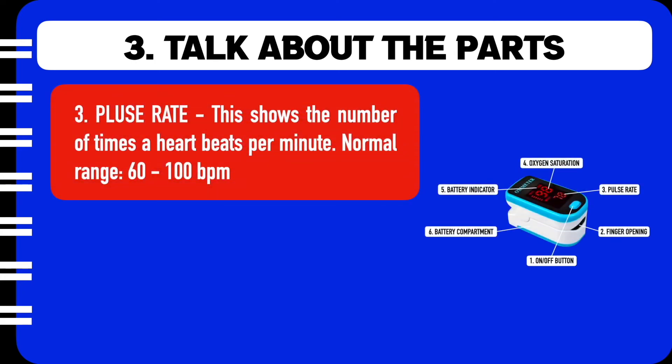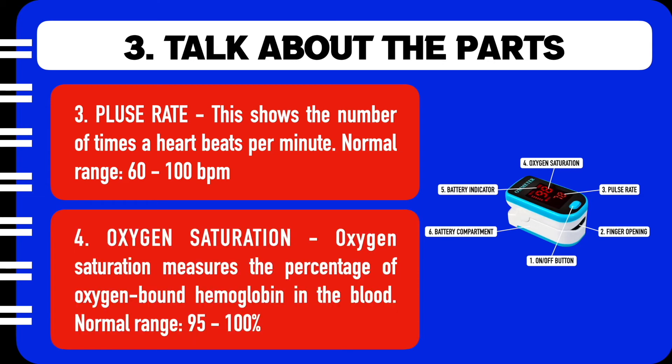The third component is the pulse rate reading. This shows the number of times the heart beats per minute. The normal range is between 60 to 100 beats per minute. The fourth component is the oxygen saturation reading. The oxygen saturation measures the percentage of oxygen bound hemoglobin in the blood. The normal range is between 95 and 100%.